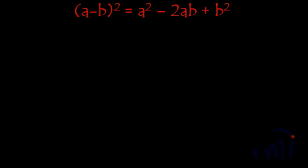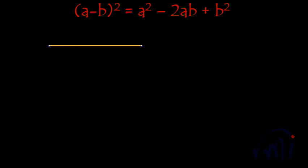Hi, so the identity we are going to learn today is a minus b whole square. So first let me take a line whose length is a. I am going to take a line — let's assume that its length is equal to a. So this is a line whose length is a.